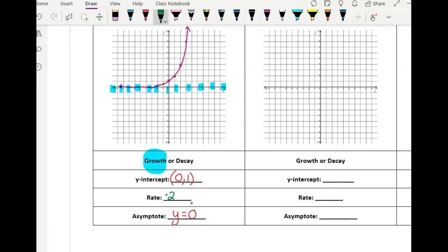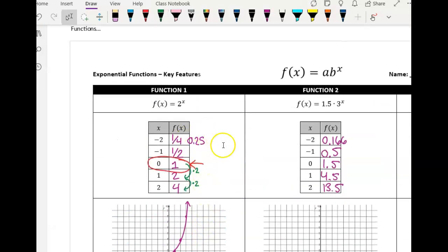So I'm looking for that pattern in my Y values to determine my rate. So my pattern here is my rate is I'm multiplying by two. That's what I want you to do for functions one through six. And then we're going to come back after you have your graphs and make some observations. Go ahead and pause the video.